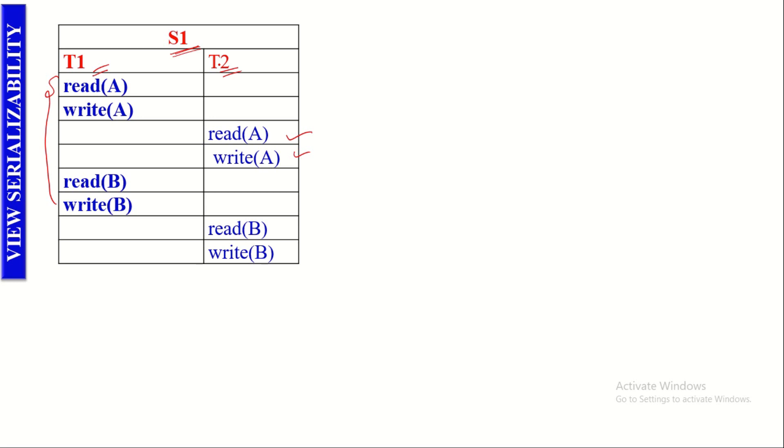Let us now discuss the view serializability concept with an example schedule. Here a schedule S1 is taken; it is a non-serial schedule. Why is it a non-serial schedule? You can notice here that before the completion of all the operations in T1, T2 is permitted to execute. That's why it is a non-serial schedule. And we know that non-serial schedules may not always give consistent result. That's why before permitting a non-serial schedule to be executed, it has to be ensured that it provides consistent result.